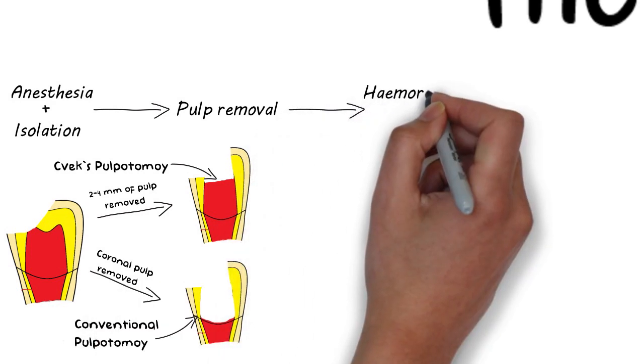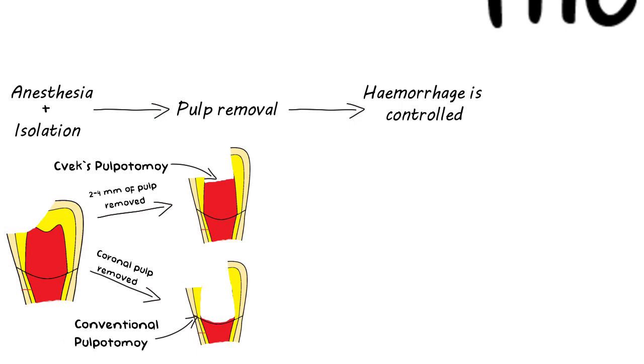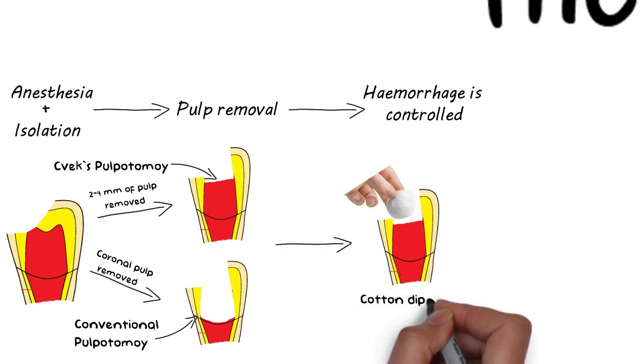Hemorrhage is then controlled by applying pressure on a cotton pellet moistened with saline. Failure to achieve hemostasis at this stage may indicate that inflamed tissue still remains and more pulp needs to be removed.